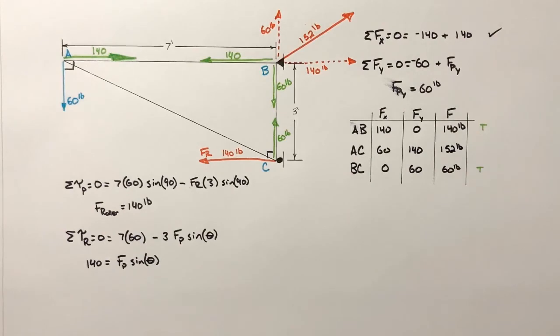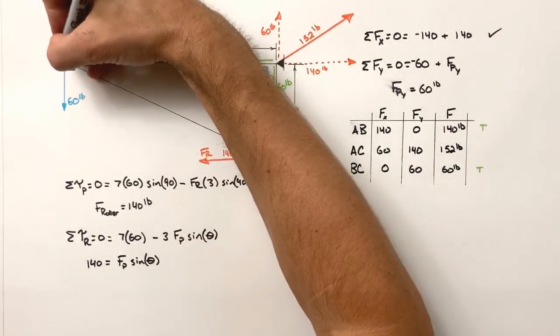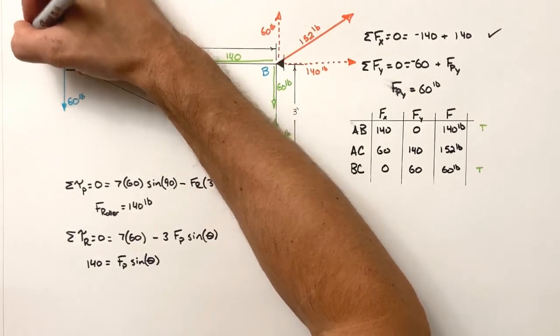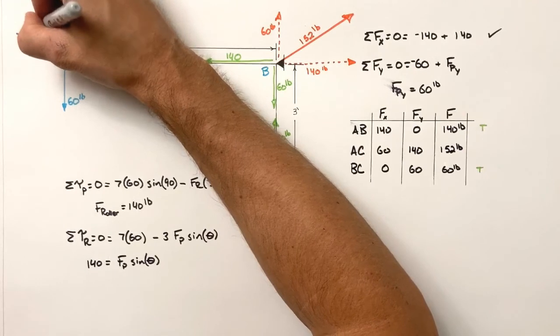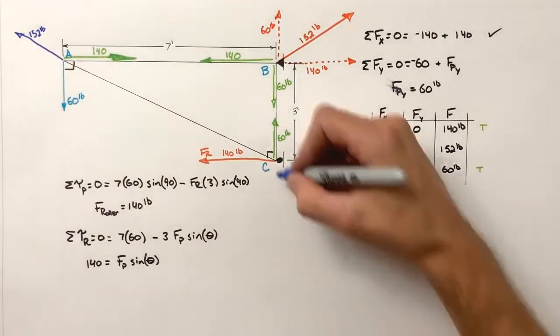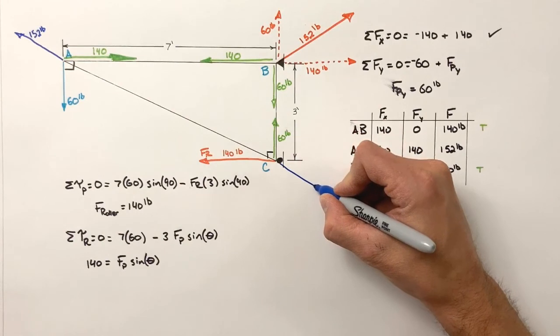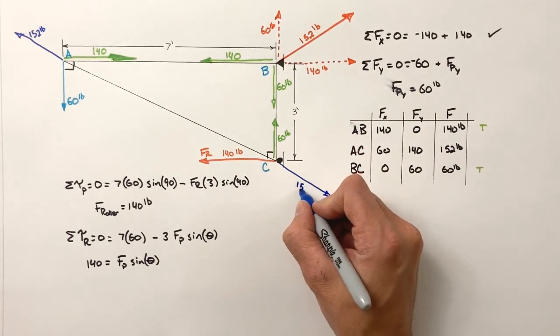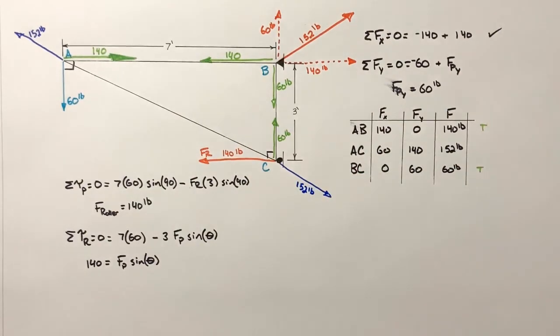Now, this beam is not in tension. It's in compression, because it's pushing. At this end, it's pushing 152 pounds. That's up and to the left. At this end, down by the roller, it's pushing down and to the right with a force of 152 pounds. It's under compression.